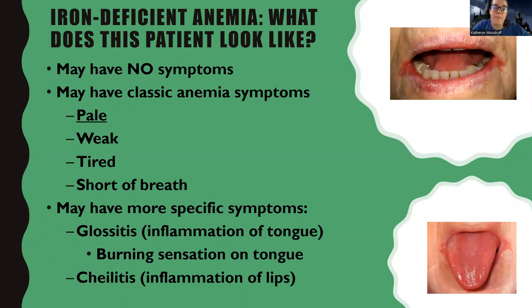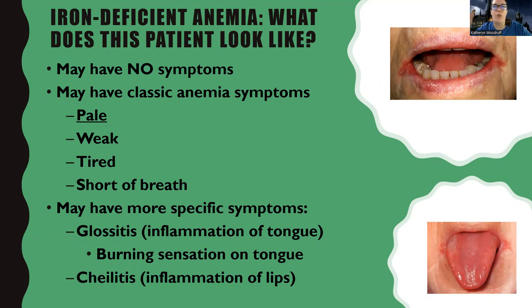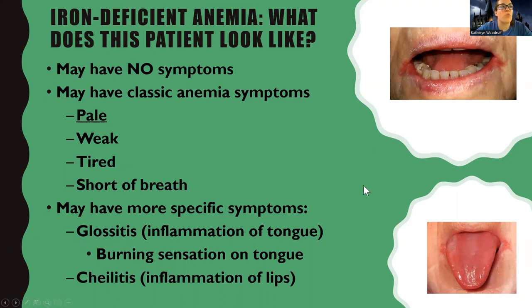Many people do not even know they have iron deficient anemia. Sometimes people find out when they try to donate blood — they do that little drop on the finger, can't donate, their hemoglobin is low, and they go to their doctor and find out. They may have the classic symptoms — pale, weak, tired, short of breath — and also more specific symptoms. The ones that stand out are around the mouth: glossitis, which is inflammation of the tongue, or cheilitis, inflammation of the lips. They can have a burning sensation on the tongue or inflammation around the mouth.